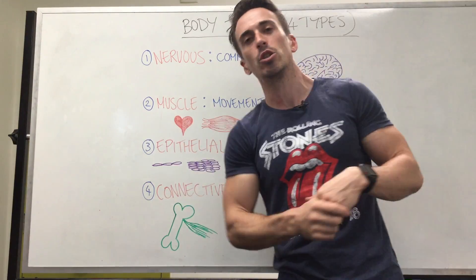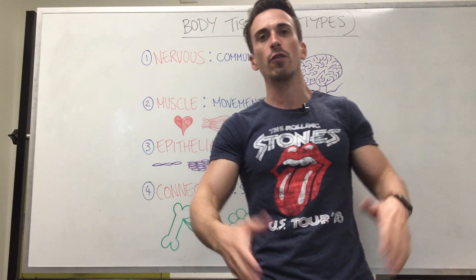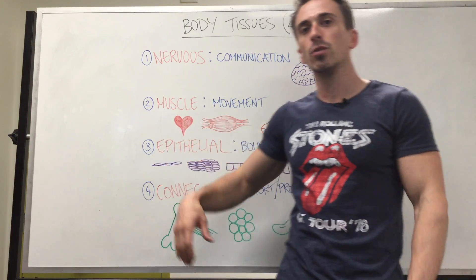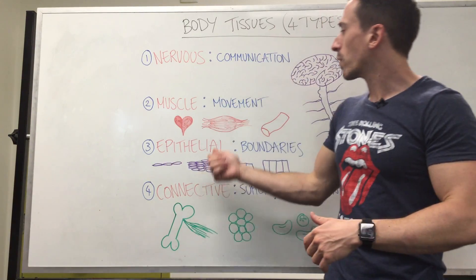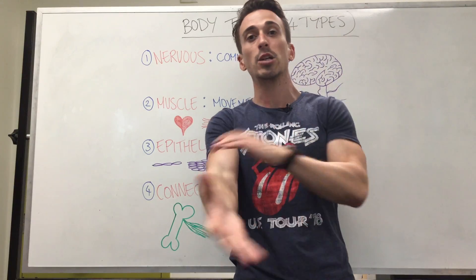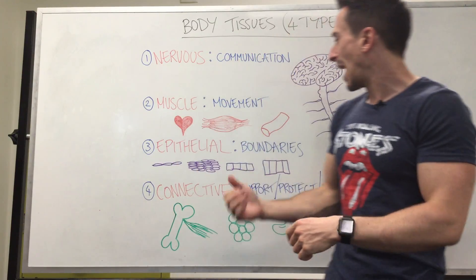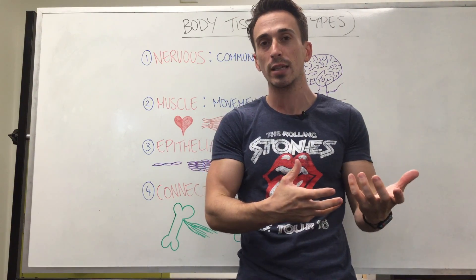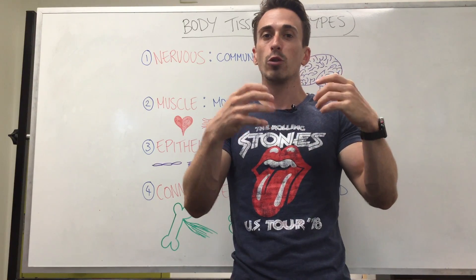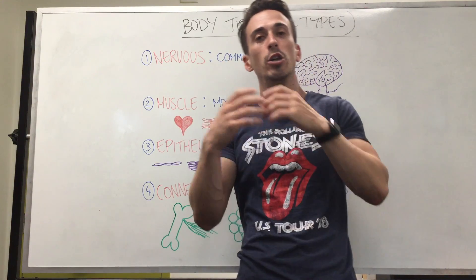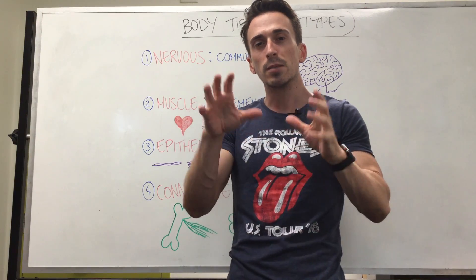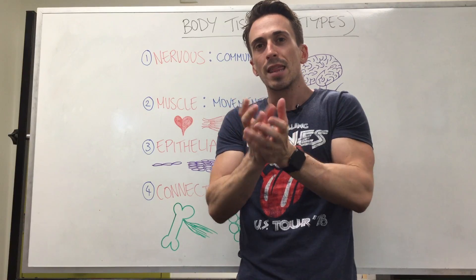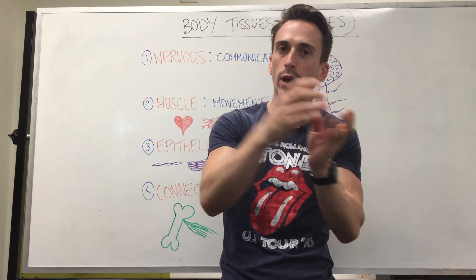When we look at muscle tissue, muscles allow for movement. There are three different types. We've got cardiac muscle — the muscle that makes up the heart. We've got skeletal muscle, attached to bones, which allows us to move our skeleton. And we've got smooth muscle, which lines our hollow organs such as those of the GI tract, urinary tract, and reproductive system.